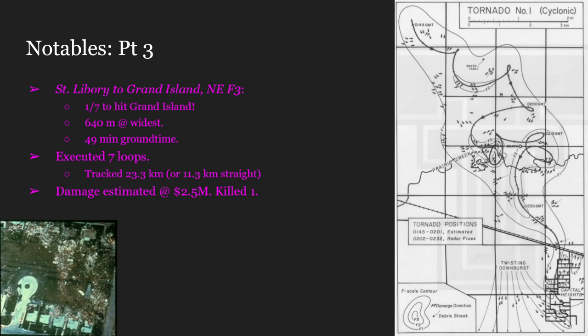This is the first of seven to affect the Grand Island area — I say 'area' because the last two of the seven did not hit Grand Island itself. This tornado at its widest was 640 meters wide, had a ground time of 49 minutes, and managed to execute seven loops, something I have never seen a tornado do. It tracked 23.3 kilometers total, or 11.3 kilometers in a straight line from start to end point. This tornado tragically killed one person, and damage is estimated at $2.5 million US dollars. We also have damage photos from this time.